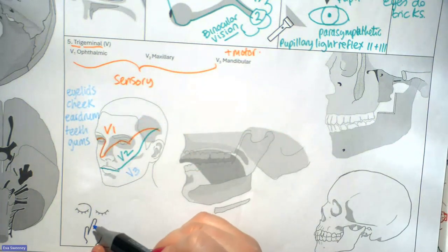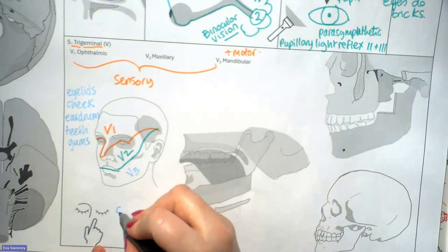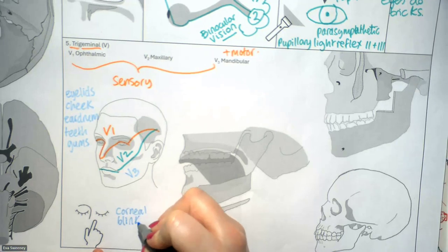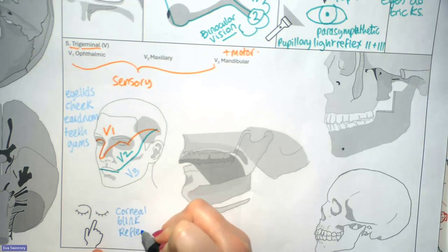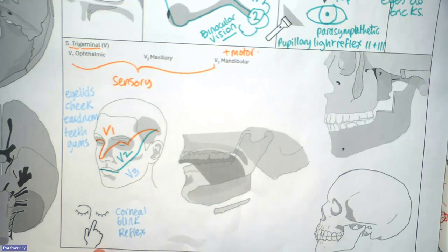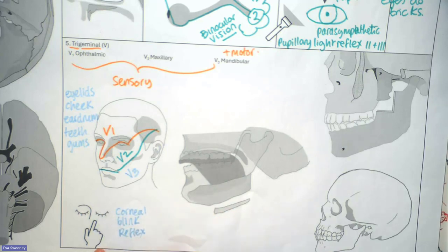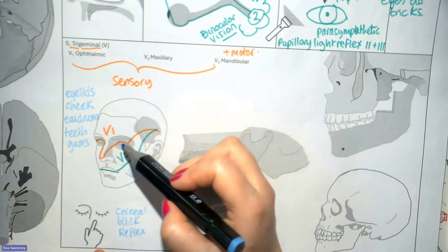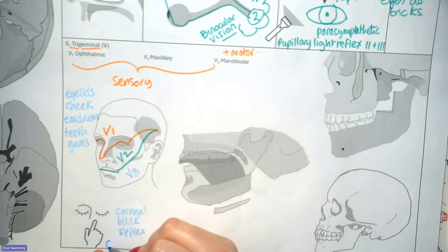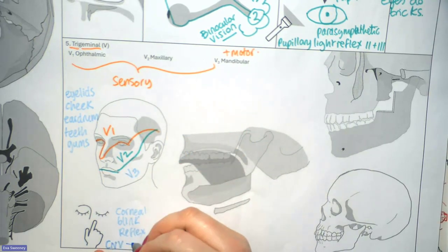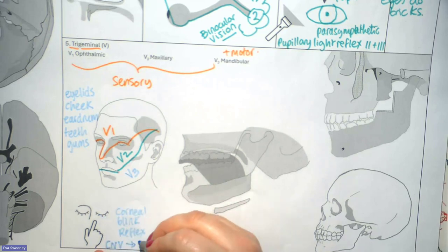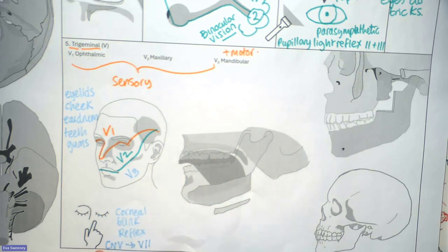That gives it a function in the corneal reflex, which protects the cornea, the covering of your eye. If something pokes the cornea, you blink in response. Two nerves are involved: sensory innervation from the trigeminal nerve, and then we close the eyelid using the facial nerve, the seventh cranial nerve.